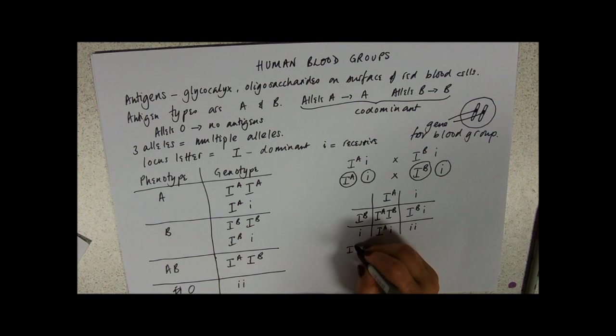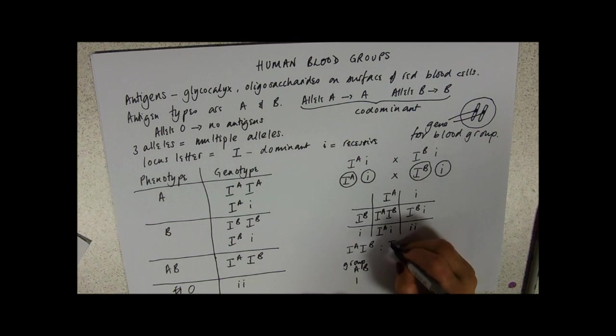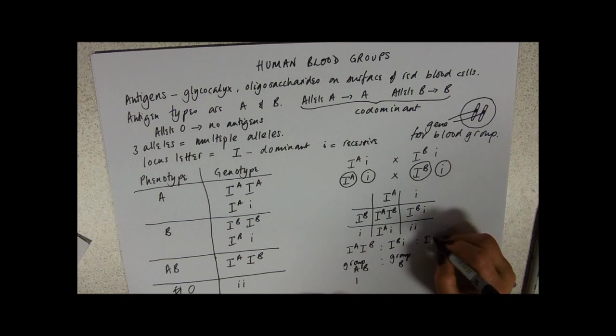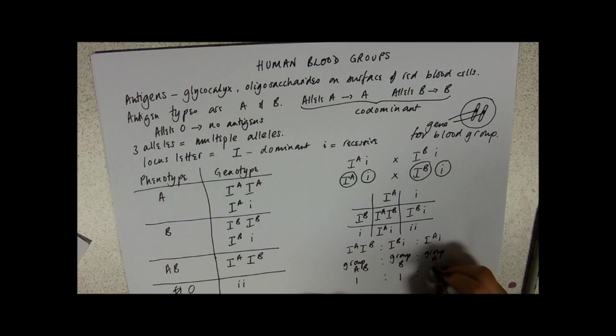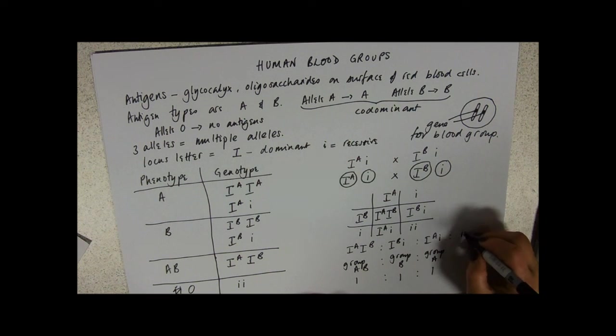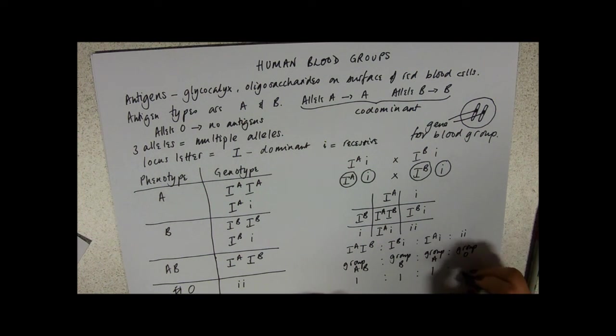So we would get, just matching the genotypes to the phenotypes, this would be group AB and we've got one of those. IB i gives us group B. IA little i gives us group A. We've got one of those. And, I don't know why it's always last, we've got then group O. We've got one of those, one to one to one to one ratio.